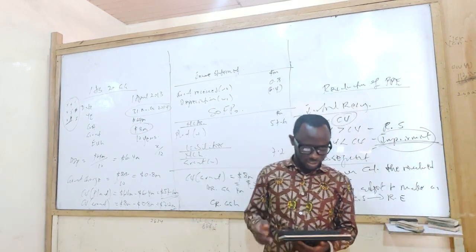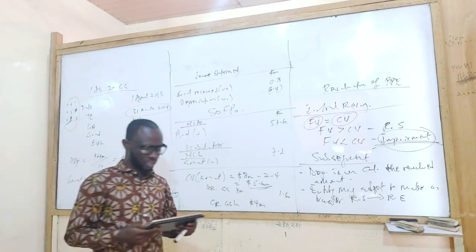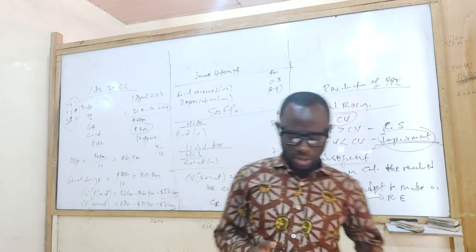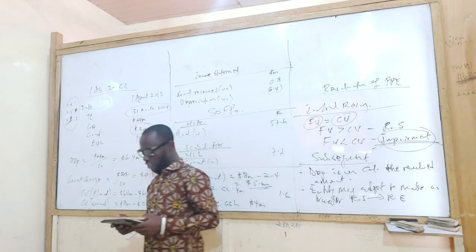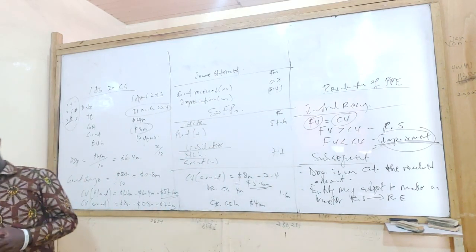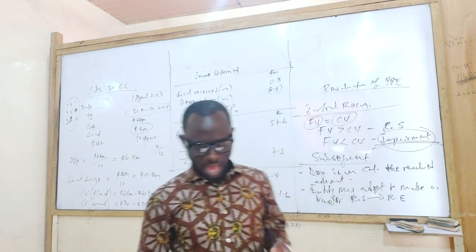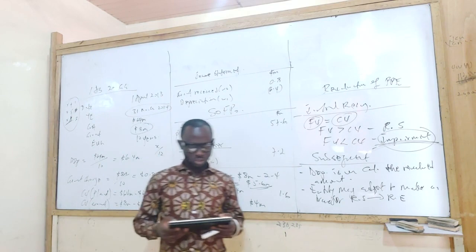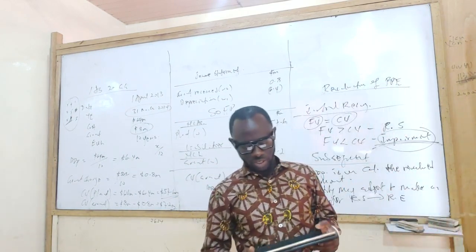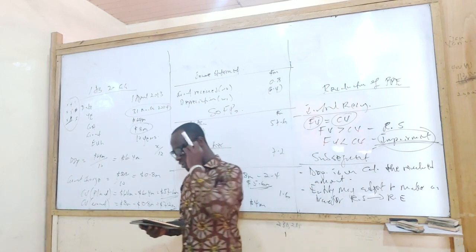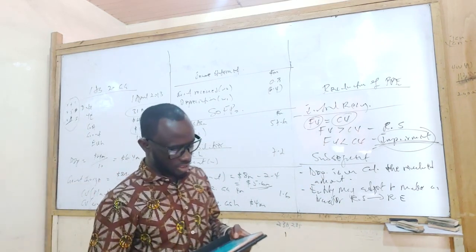It says the following details relate to items of property, plant and equipment A and B, owned by Delta, which are depreciated on a straight-line basis with no residual value. We can see A and B — their estimated useful lives are 8 and 6 years. The cost on 1st April 2010 and accumulated depreciation for 2 years have been charged already, so the carrying value as of 31st March 2012 has also been given.